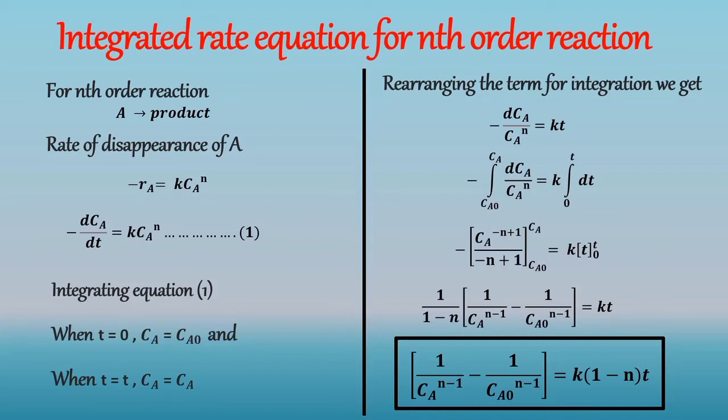This is the integrated rate equation for nth order reaction. From this equation we can conclude that the unit of reaction rate constant depends on the concentration and temperature. Hence the dimension of rate constant k for nth order reaction is time inverse and concentration raised to 1 minus n.